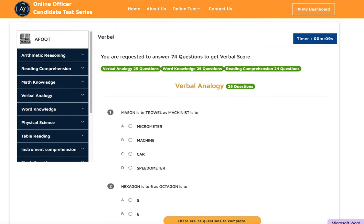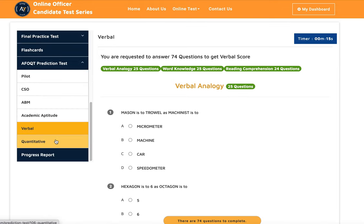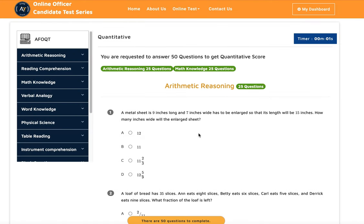Word knowledge means you need to know the vocabularies and reading comprehension. The last one is quantitative, based on your arithmetic reasoning and math knowledge skills level.